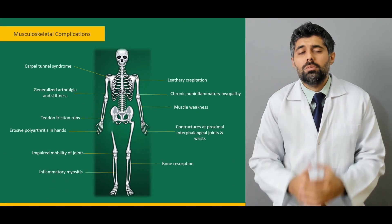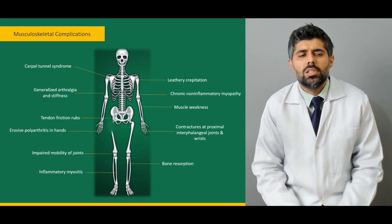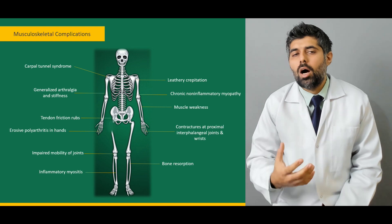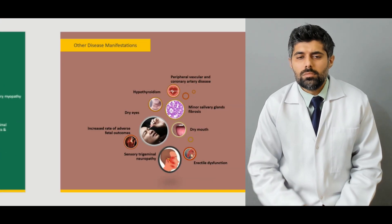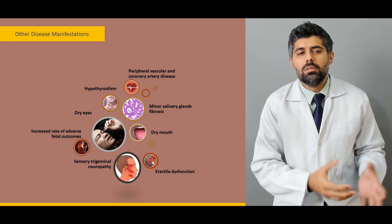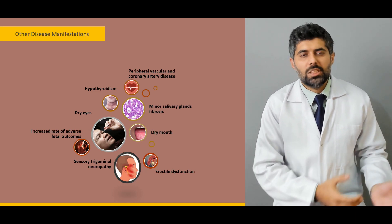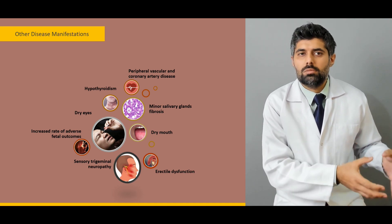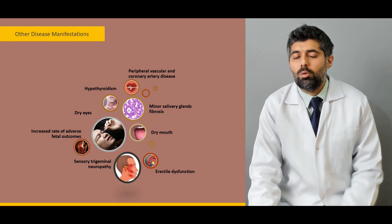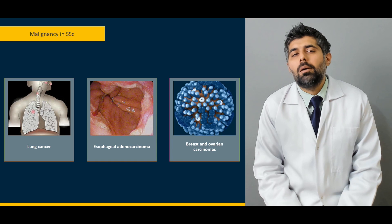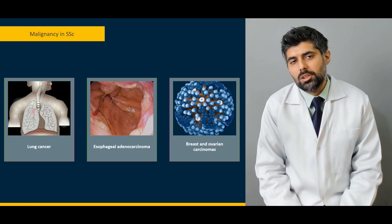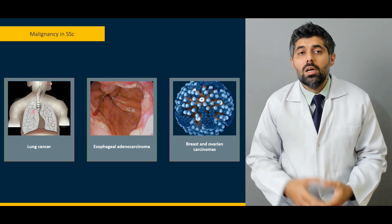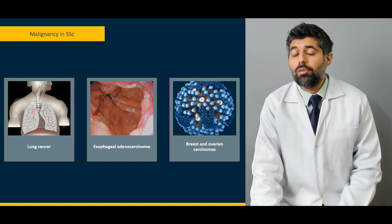Then we'll study about various musculoskeletal complications such as carpal tunnel syndrome among others, and why they happen and how they occur. Then we'll study about the other manifestations found in systemic scleroderma which cannot be categorized in one system. Then we'll study about the malignancy in systemic scleroderma, and why lung cancer and esophageal cancer is more common in contrast to breast and ovarian cancer.